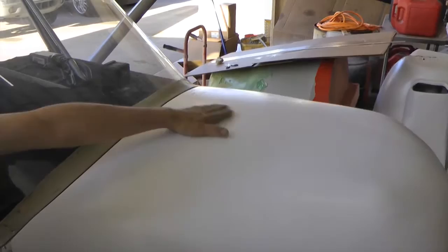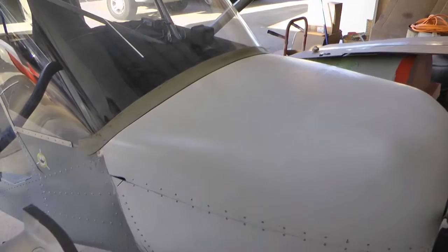And this is also where our oil dipstick is going to come out. So once this is flush here, we can actually check the oil without taking the cowling off.